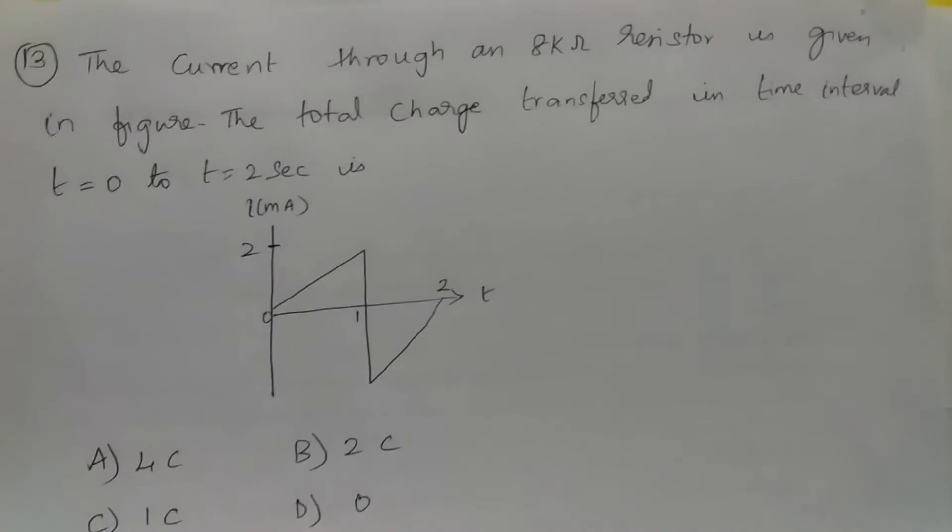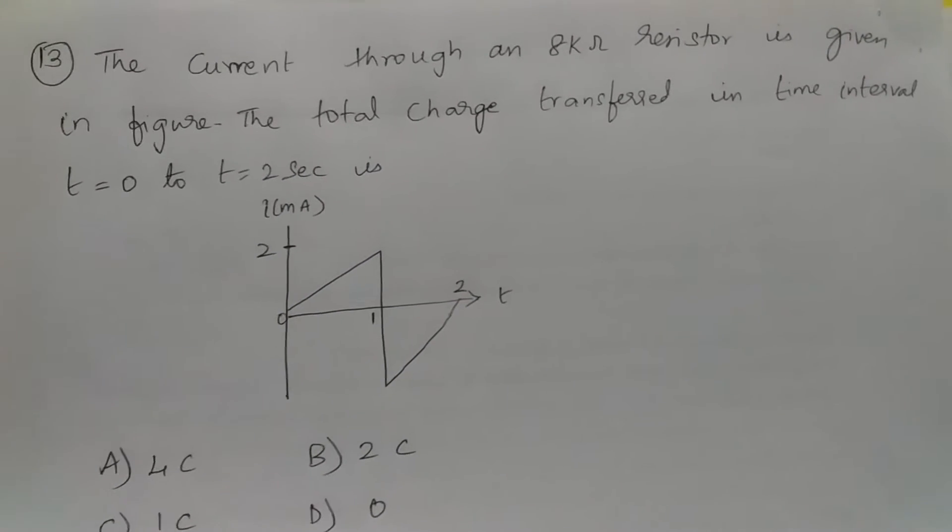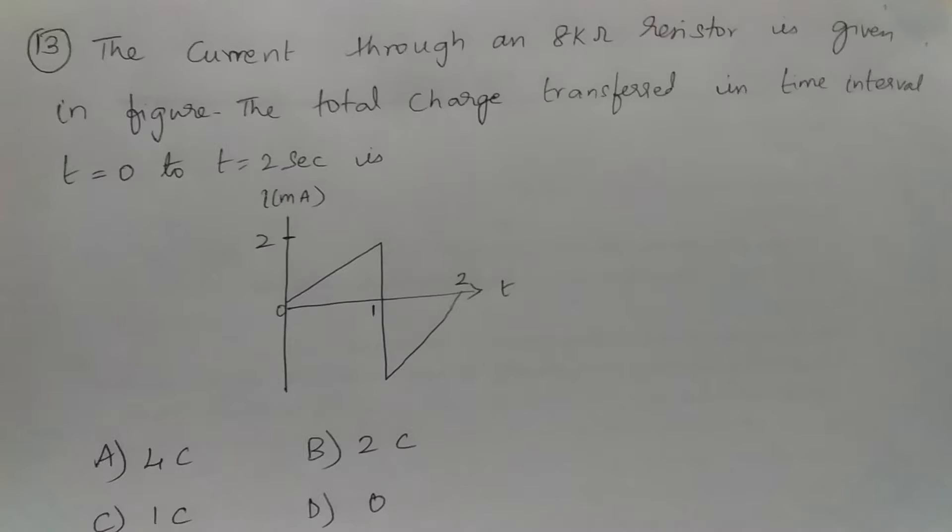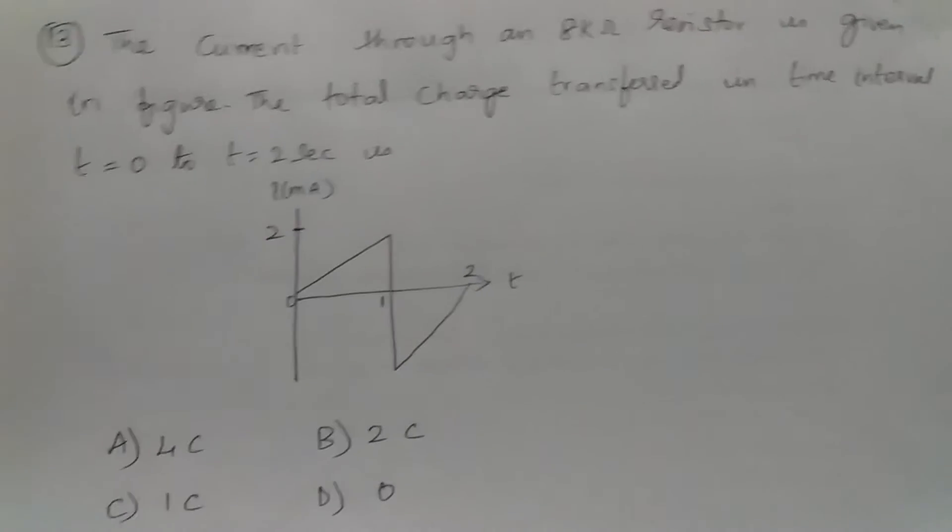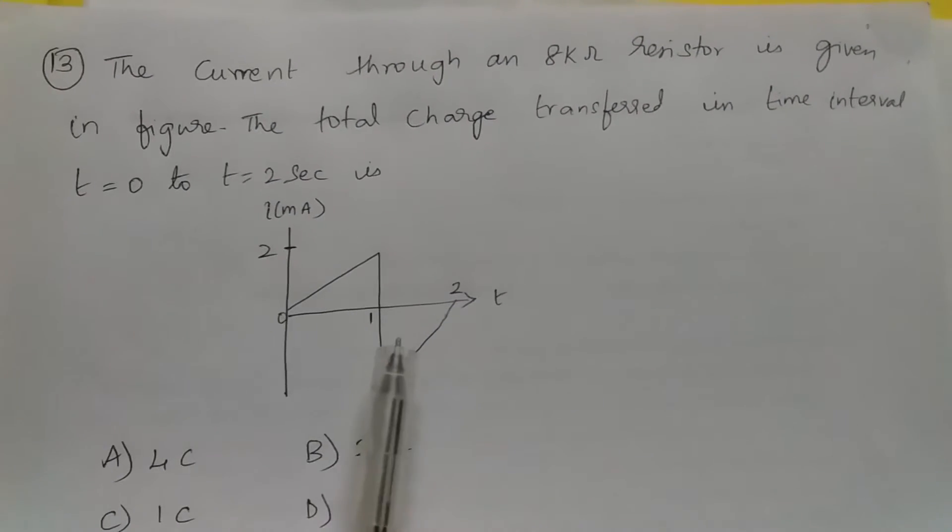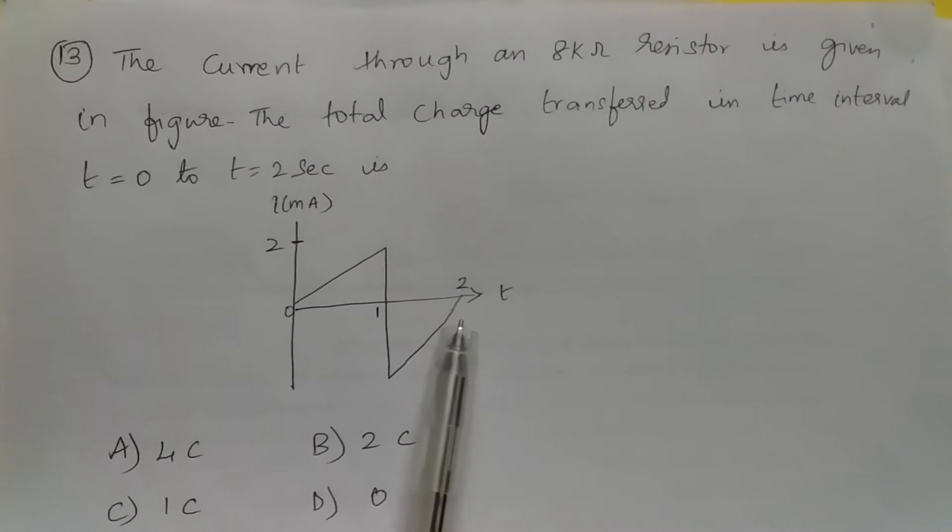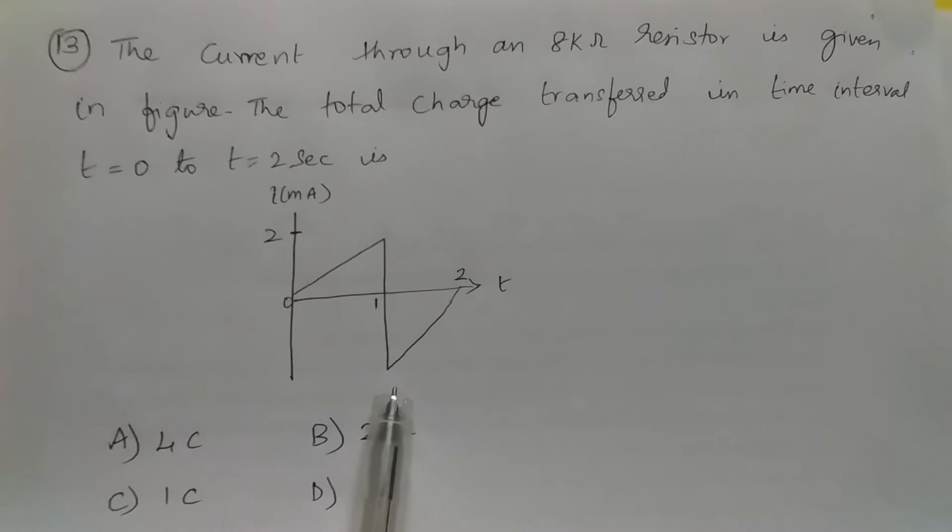The current through an 8 kilohm resistor is given in figure. The total charge transferred in time interval T equals 0 to T equals 2 seconds is: Here is the figure - from 0 to 1, the current is 2 milliamps, and from 1 to 2 seconds, the current is minus 2 milliamps.